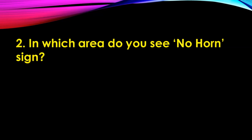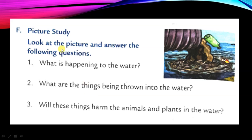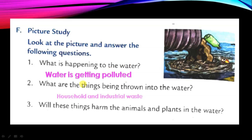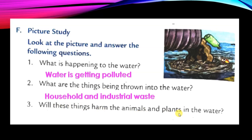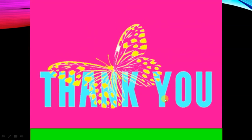Pollutants are things which make air, water or soil dirty and are harmful to people, animals and plants. In which areas do you see a no-horn sign? Answer: hospitals and schools. Picture study: what is happening to the water? Water is getting polluted. What is being thrown into the water? Household and industrial waste. Will these things harm animals and plants in the water? Yes, these things harm animals and plants in the water.